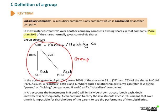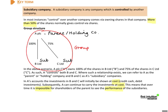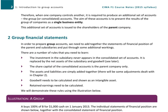When A purchases the shares in B and C, the investment in its own financial statements will simply be shown at cost. We'll credit cash when we spend the money to buy the shares and debit investments as a non-current asset. Going forwards, A can continue to carry those investments at their original cost, which means it's impossible for the shareholders in A to see how well the subsidiaries are performing or whether those shares were a good investment.